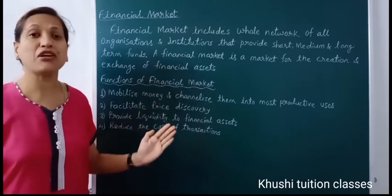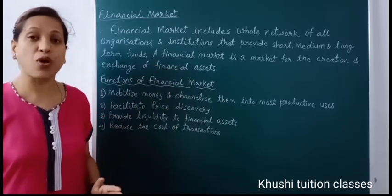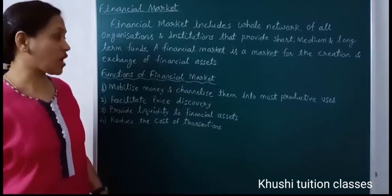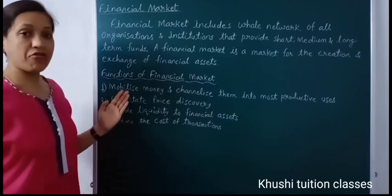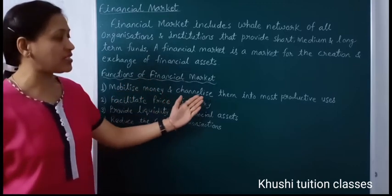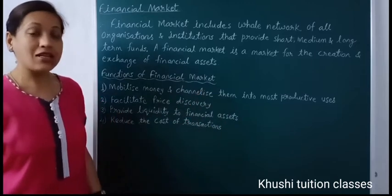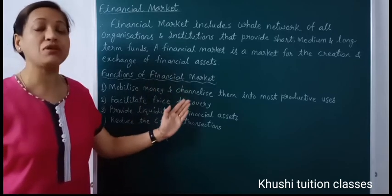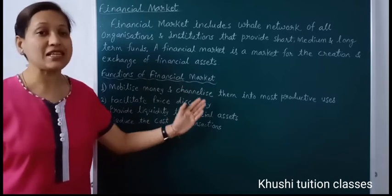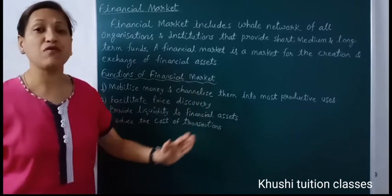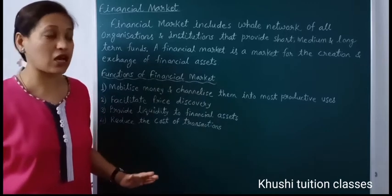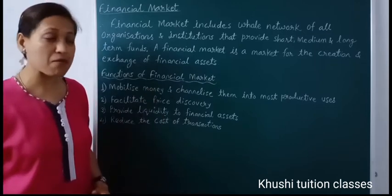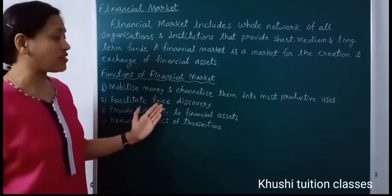To operate this financial market, depositories, brokers, and stock exchanges all work together. The first function of financial market is to mobilize money and channelize it into the most productive uses. Savers keep their money in the financial market, and from there money is given to business firms for investment so that this money can be put to productive use and generate income. So mobilization — transfer of money — is the most important function of financial market.